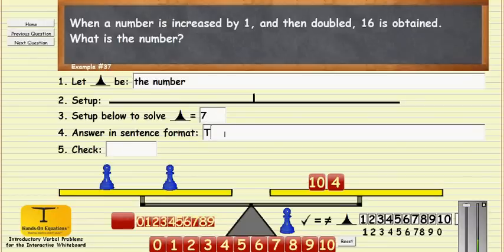The answer in sentence format: the number is 7. And to do the check, when a number 7 is increased by 1, that's 8, doubled that would be 16. 16 is obtained, so we see then that the answer to this problem is 7 and the check is 16 equals 16.